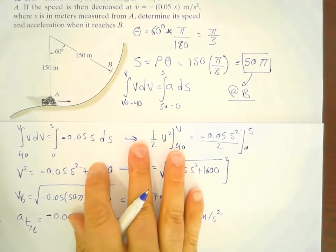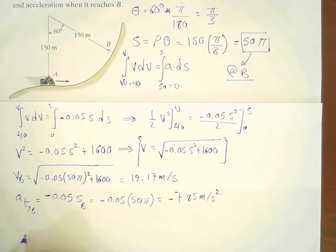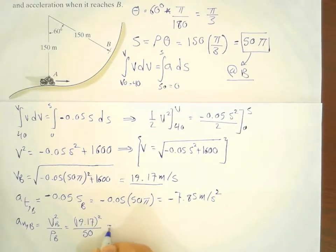For the normal component of the acceleration, A_normal at point B is equal to velocity squared at point B over ρ at point B as well. V at point B was already calculated. So, we just simply substitute it in this relationship, 19.17 squared over 50, and this would yield 2.45 meters per second squared.